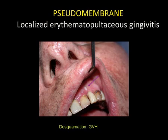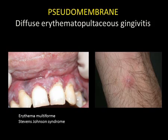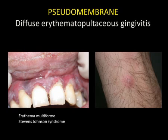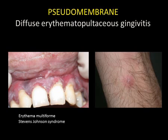Localized erythemopultaceous gingivitis may be due to excessive cellular desquamation. In the case of graft versus host disease, the differential diagnosis of acute candidiasis must be proposed. Diffuse erythemopultaceous gingivitis is observed principally in erythema multiforme and Stevens-Johnson syndrome. In erythema multiforme, there will be a cutaneous target lesion which will enable the diagnosis to be made.